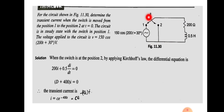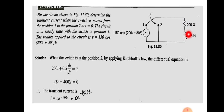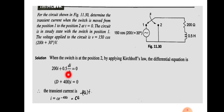When t equal to 0, the switch moves to position 2 and the circuit has no source. Applying Kirchhoff's voltage law for the loop when the switch is at position 2, the algebraic sum of voltage drops equals 0. This gives: 200i + 0.5(di/dt) = 0, because there is no source connected at this position.